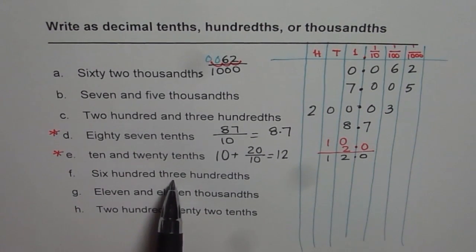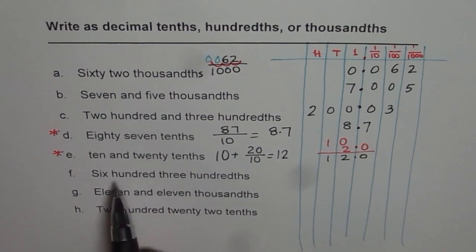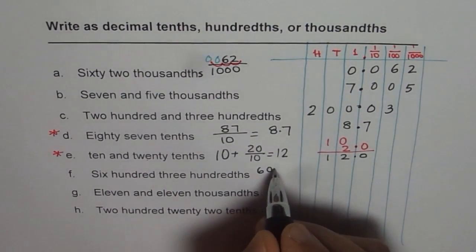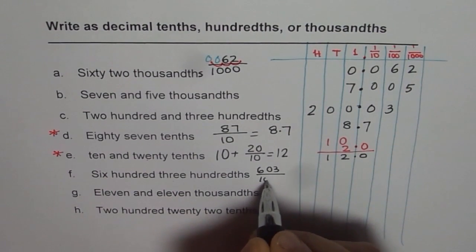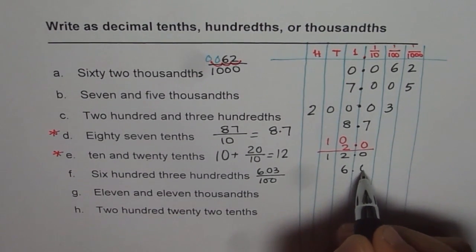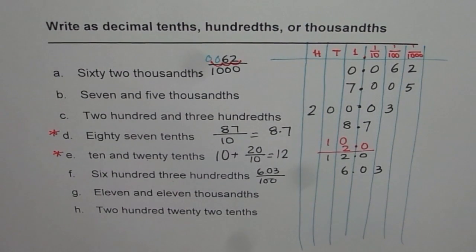Six hundred three hundredths. That really means six hundred three over hundred. So when you do that, the decimal comes here. So it is six point zero three. That is one way of looking into it.